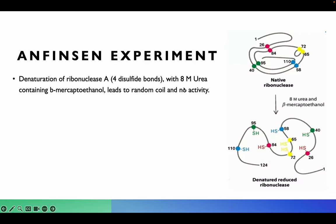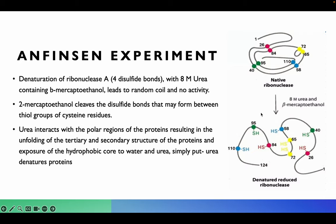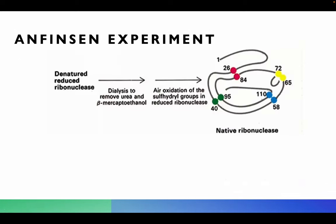What Anfinsen did was denature ribonuclease A by adding 8 molar urea containing beta-mercaptoethanol. Beta-mercaptoethanol cleaves the disulfide linkages present between the cysteine groups. Urea interacts with the polar regions of proteins, resulting in the unfolding of the tertiary and secondary structure and exposure of the hydrophobic core. Treating native ribonuclease with urea and mercaptoethanol produces a denatured, reduced ribonuclease which is not functional and has no activity.